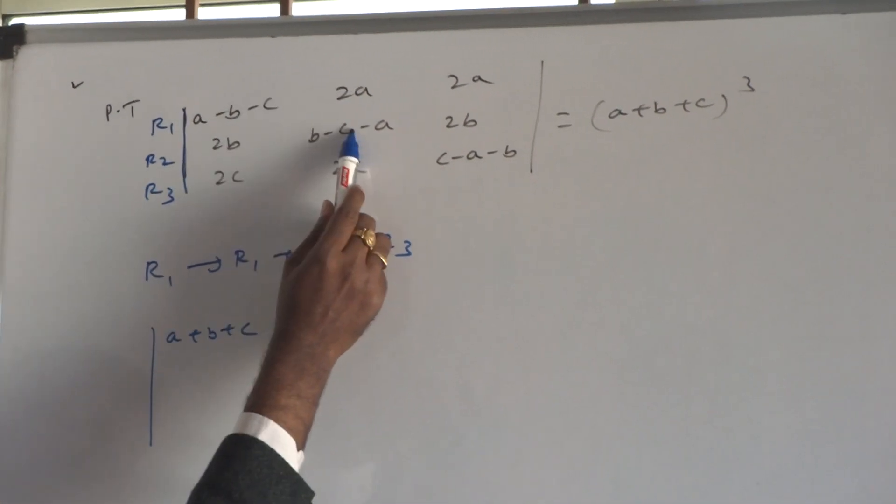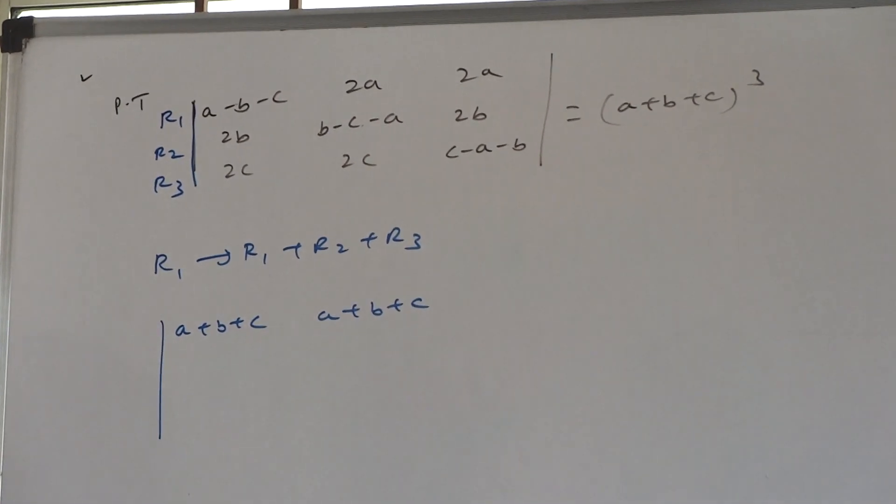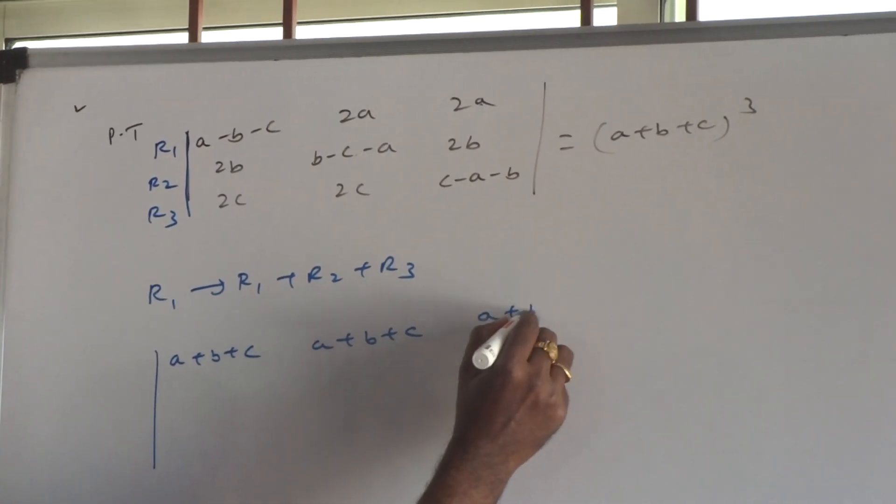Similarly, row 1 second element, row 2 second element, row 3 second element. If you add, what you will get? A plus B plus C. Row 1 third element, row 2 third element, row 3 third element. A plus B plus C.